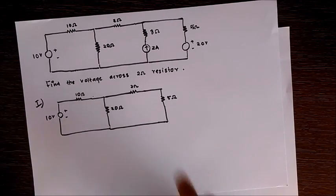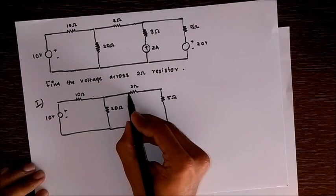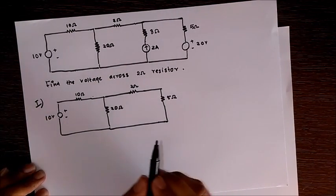The 20 volt source is short circuited. Now we get a simple circuit like this in which we have to find out the voltage drop across the 2 ohm resistor.